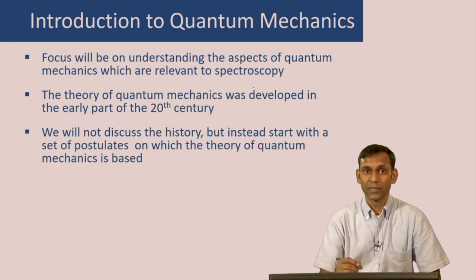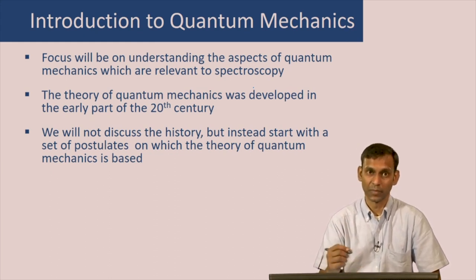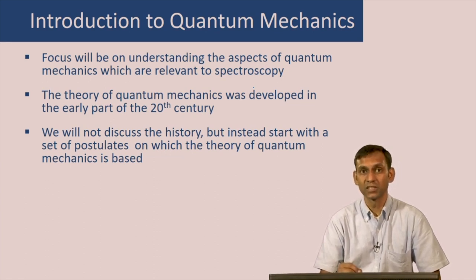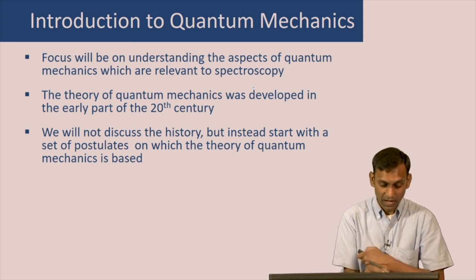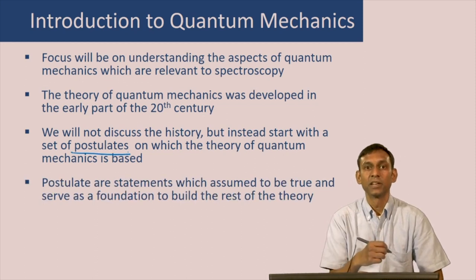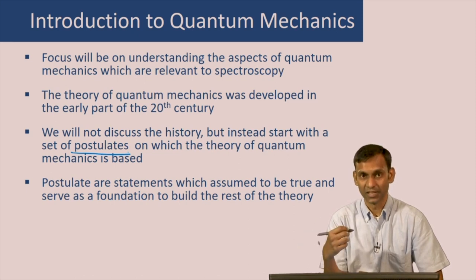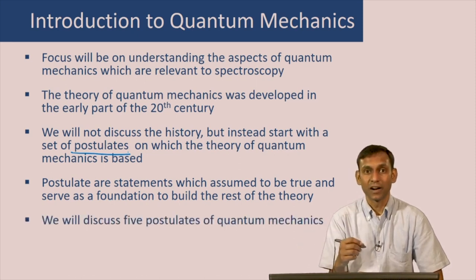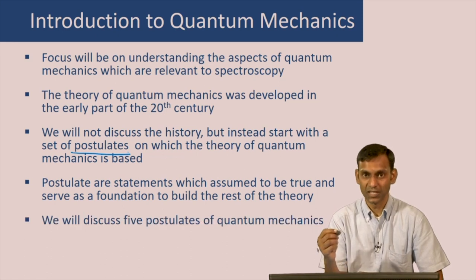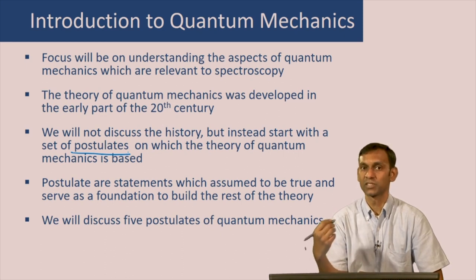However, in the interest of time, we will not discuss this history, but instead take a postulational approach to understand quantum mechanics — that is, we start with a set of postulates on which this theory is based. A postulate is nothing but a statement which we can assume to be true, and then use that to build the rest of the theory. We will start with 5 such postulates and then develop the theory of quantum mechanics based on those statements.